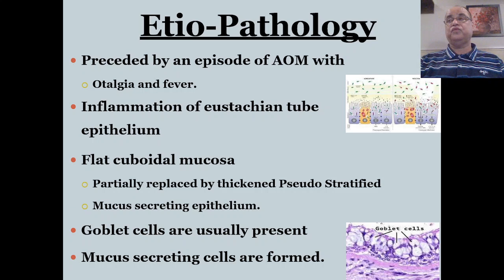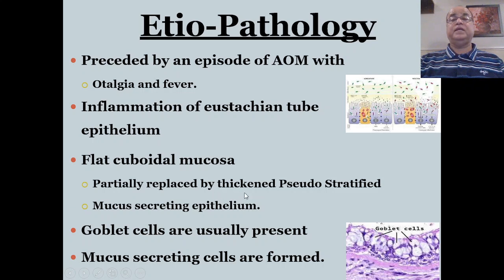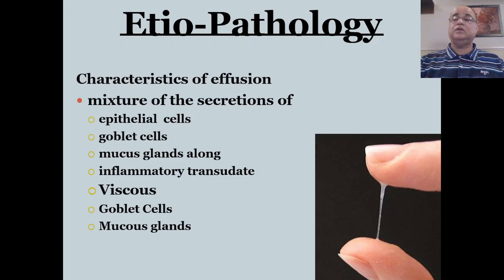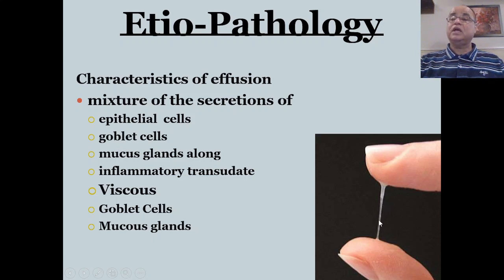The flat cuboidal epithelium in these cases may be replaced by thickened pseudostratified mucus-secreting epithelium; goblet cells are present and mucus-secreting cells are formed. The effusion is a mixture of epithelial cells, goblet cells, mucus glands, along with inflammatory transudate — very viscous and thick. These secretions removed from the middle ear cavity are so thick that they make a strand between two fingers.